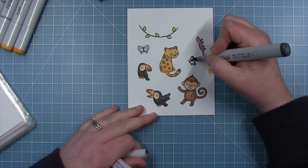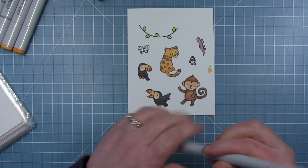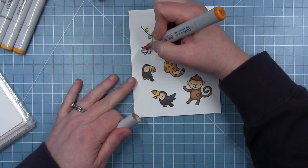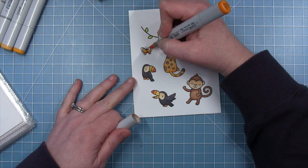For my butterflies, I decided to go with the colors of monarch butterflies and use some dark grays, which is the same dark grays I used for the toucans, and then a bright orange.